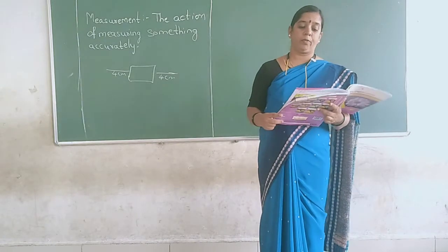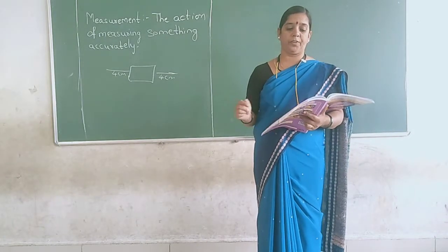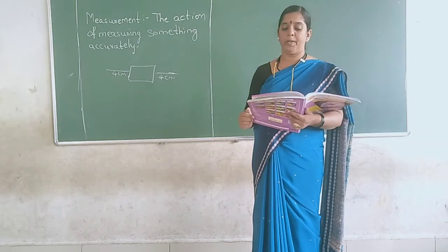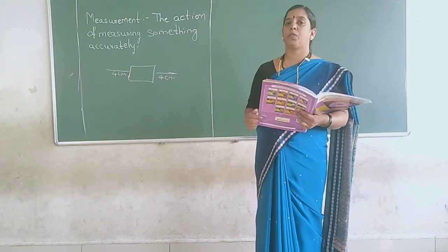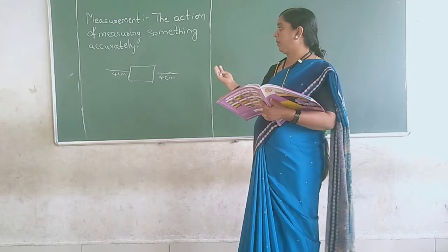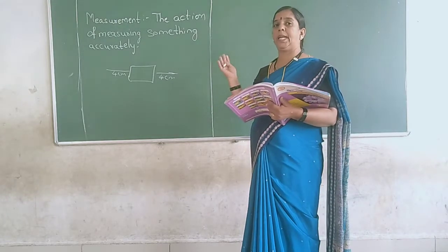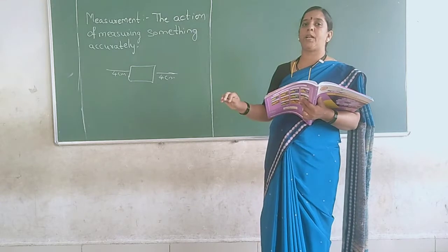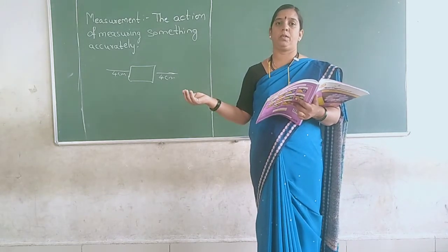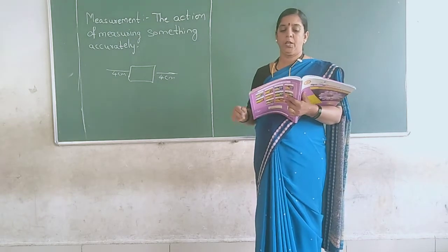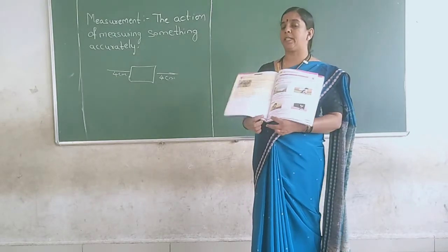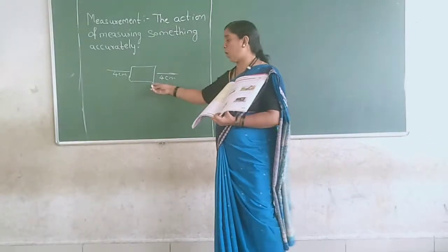We use various non-standard units to measure the length of different objects. These units can be non-uniform or uniform. If an elder person measures, they get one measurement; if a small child measures the same thing, they will get a different result. Here, Agna is measuring the cord size — he is a small boy using his feet to measure it.